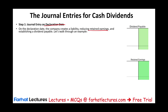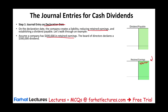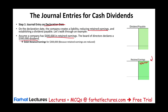On the declaration date, the company creates a liability by reducing retained earnings. Assume a company has $600,000 in retained earnings — the cumulative earnings over the years, as net income is closed into retained earnings. The company declared $300,000 in dividends; they are going to pay $300,000 out of retained earnings to shareholders. On the declaration date, we debit retained earnings — reducing retained earnings — and we create a liability of $300,000 called dividend payable.